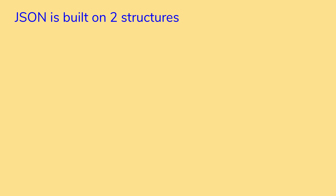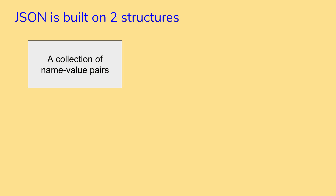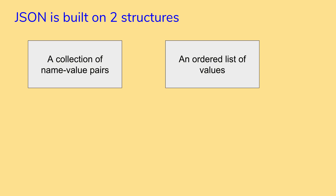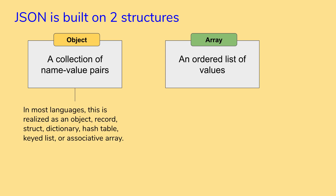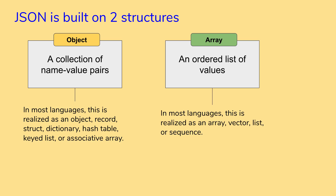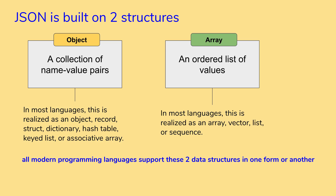JSON is built on two structures. A collection of name-value pairs, and an ordered list of values. A collection of name-value pairs is called an object, and an ordered list of values is called an array. These are the two basic structures in a JSON message or document. Most programming languages support these structures — object can be realized as a record, dictionary, or hash table, and array as a vector, list, or sequence.